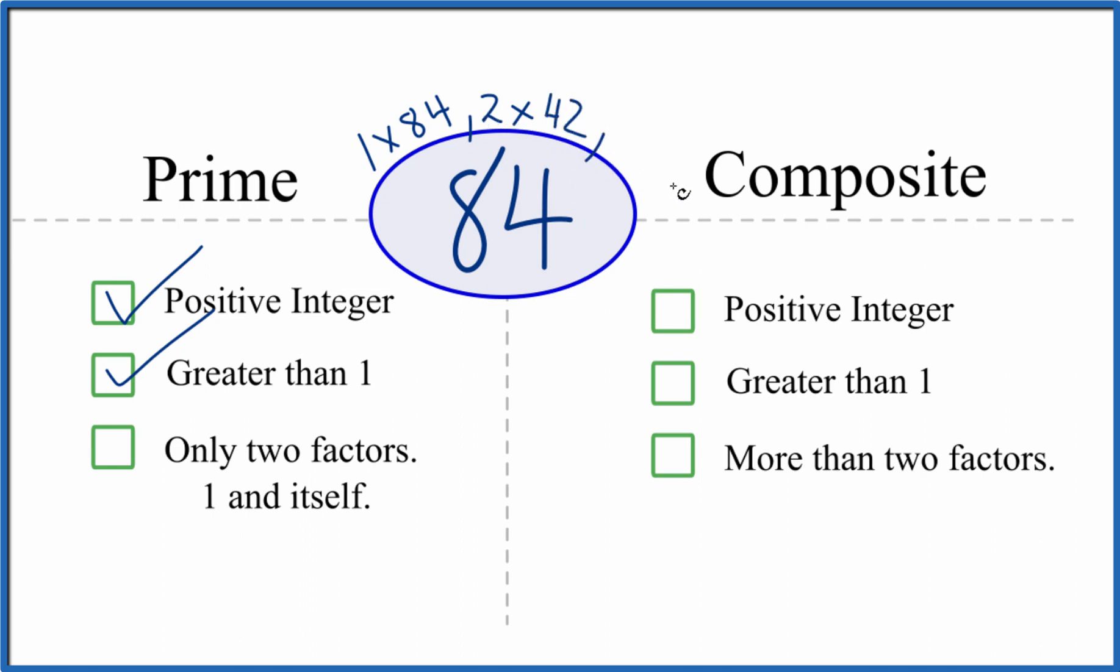And actually, it turns out there's quite a few other factors of 84. But we can already see that there's more than two factors. So 84 is not a prime number.